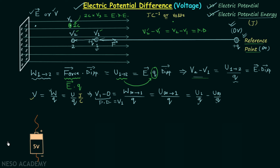A battery is also known as a voltage source because there is a potential difference between its positive and negative terminals. If the potential difference is 5 volts, this means the potential at the positive terminal Vp minus the potential at the negative terminal Vn equals 5 volts. In a battery, the positive terminal is at higher potential and the negative terminal is at lower potential.